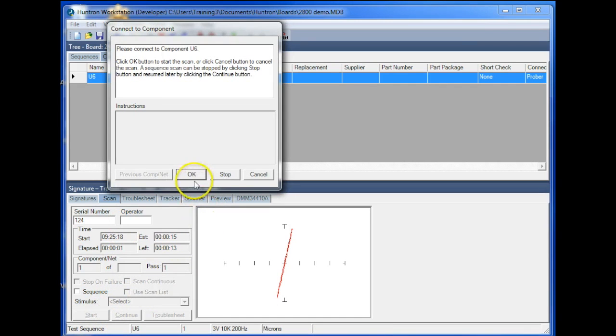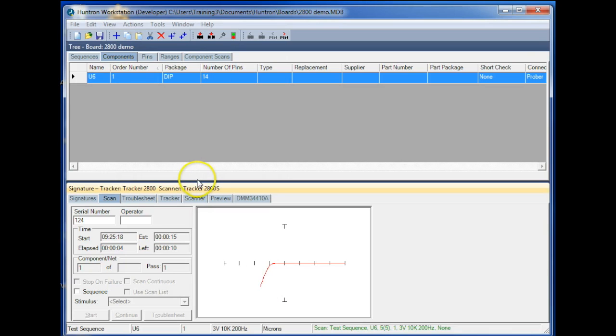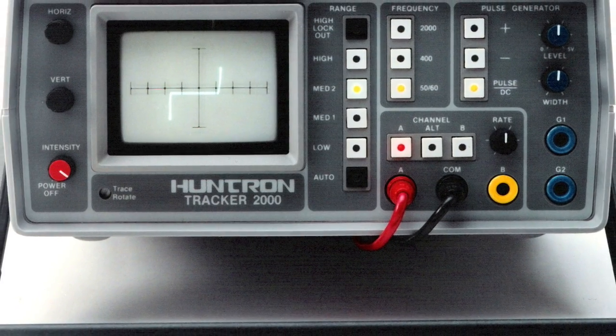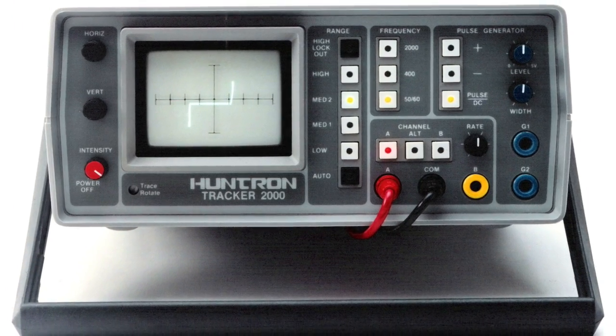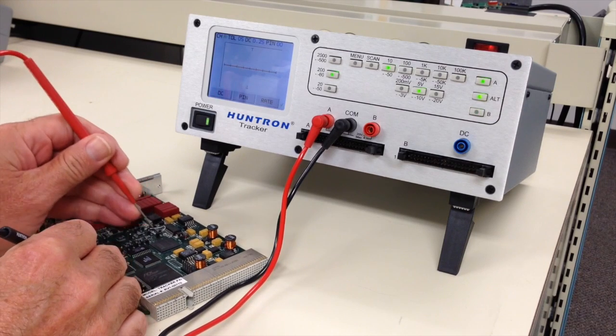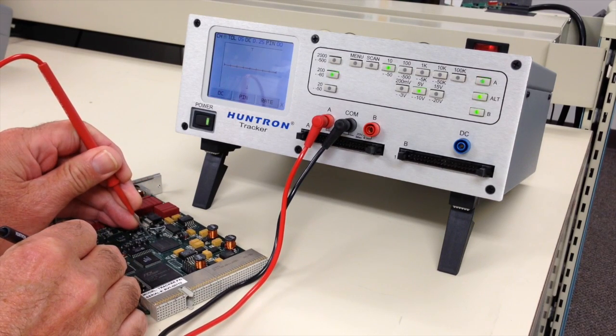This allows for consistent use, repeatable results, and eliminates the need for a constant known good comparison PCB. In conclusion, while the tracker 2000 was a great tool in its day, the tracker 2800 is a power-off test instrument that has evolved along with the technology that challenges us today.